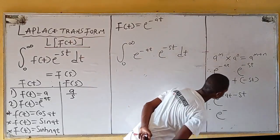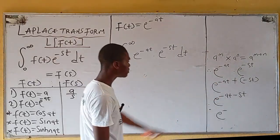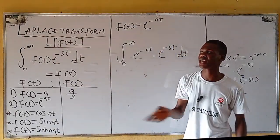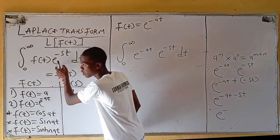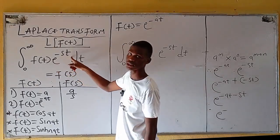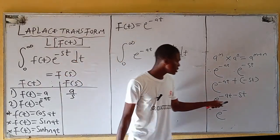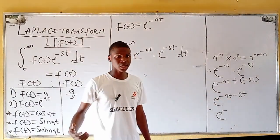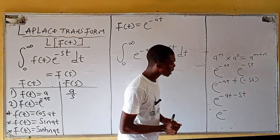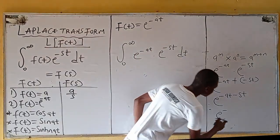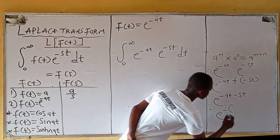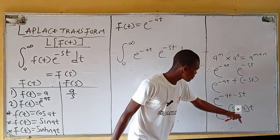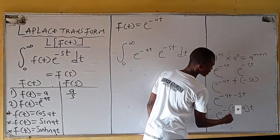What is common here? t is common, so factorize. This gives e^(-t(s+a)). Observe: in the general Laplace formula, s comes before t in the exponent. So we write it as e^(-(s+a)t), ensuring s comes first. When you expand this bracket you still get the same expression.